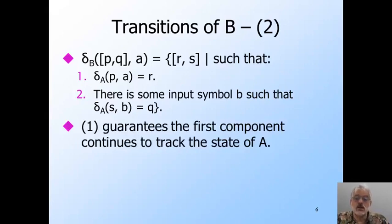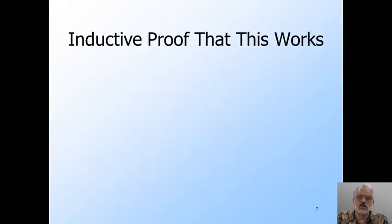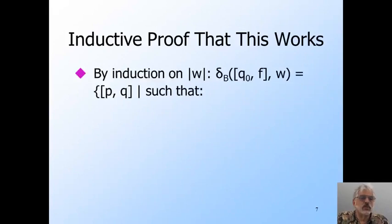Thus, if X takes A to state P, then XA takes A to state R. That's this. We could prove by simple induction on the length of W that the first component of B's state after reading W is always the state A would be in after reading W. But we won't do the proof. We can also prove by induction on the length of the input that the second component of B's state can be all and only the states of A that reach an acceptance state by following a path whose length is exactly the same as the length of the input B has read so far. As I said, we're not going to do the inductive proof that this construction works, but I'll set it up for you.